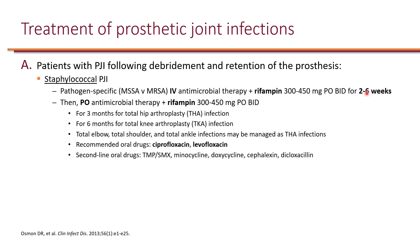Rifampin is only available as oral, so the rifampin portion will be oral, whereas coverage of MSSA or MRSA requires IV antimicrobial therapy for excellent bioavailability. The two to six weeks duration is decided based on how the patient progresses, monitoring C-reactive protein. Beyond six weeks, the patient needs to be switched to oral antimicrobial therapy. The duration depends on the type of arthroplasty: total knee arthroplasty requires six months of oral therapy, whereas total hip arthroplasty requires three months.